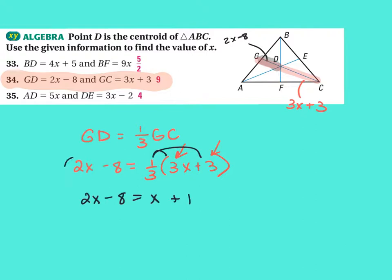So it would have been 3 times this equals that. X would equal 9.